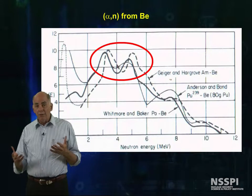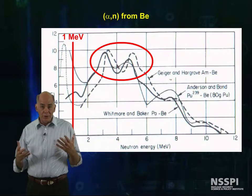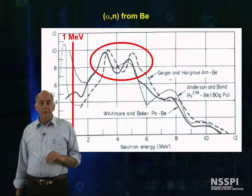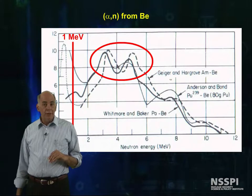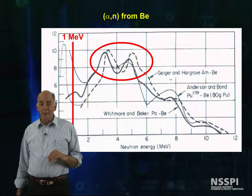But in general, it's a much harder, meaning more energetic spectrum, than a fission spectrum. And the average neutron energies are well above 1 MeV.